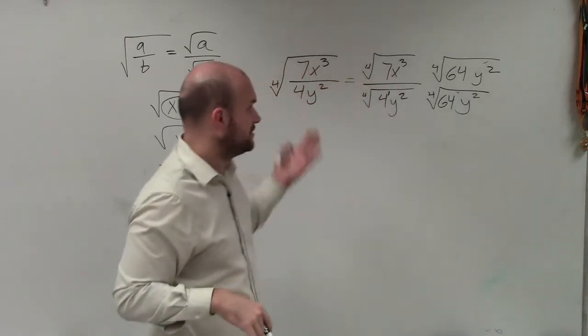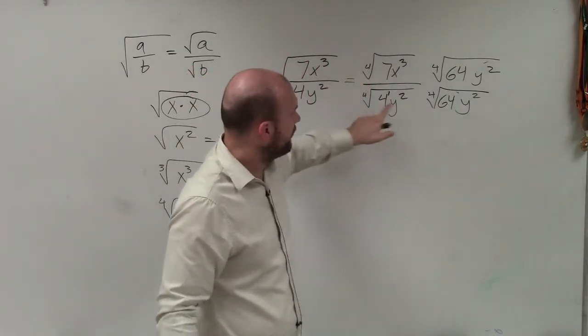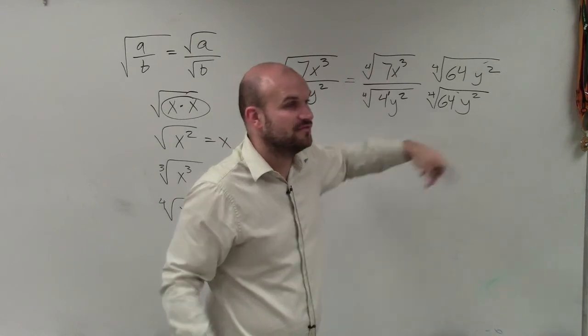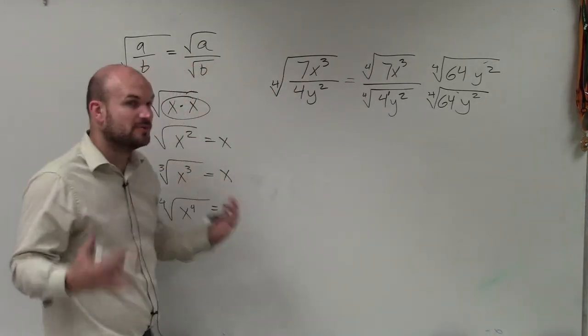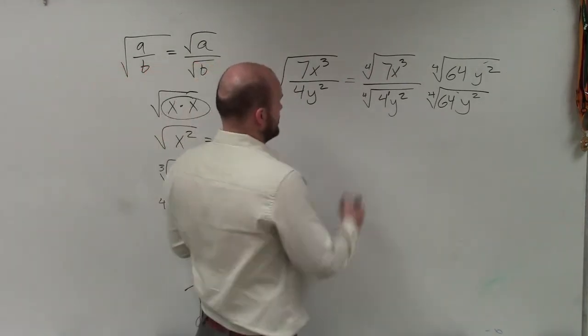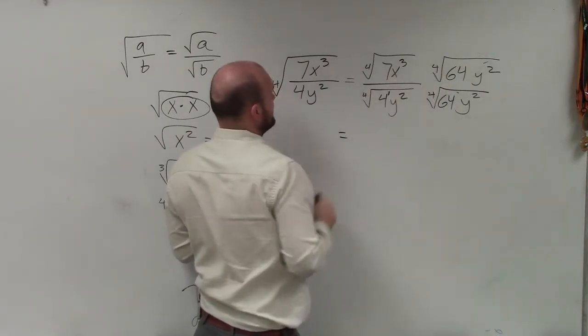OK, so now I'm going to multiply those on the top and the bottom. Now remember, this 4 times this 4 cubed versus 64 is going to give me a fourth root of a number, which we need to go ahead and determine here. So now let's go and multiply the top here.